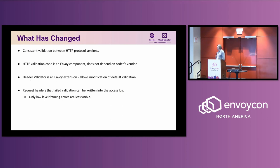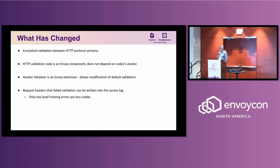It's also an extension, so anyone can go and modify the default behavior. One of the possible extensions is to make Envoy fully compatible in terms of protocol validation with NGINX or HAProxy, to allow more seamless migration from one proxy to another. We also get much improved observability, because the elements that caused protocol errors can be emitted into the access log. So you can actually see what's wrong with your request and why you're getting protocol errors.